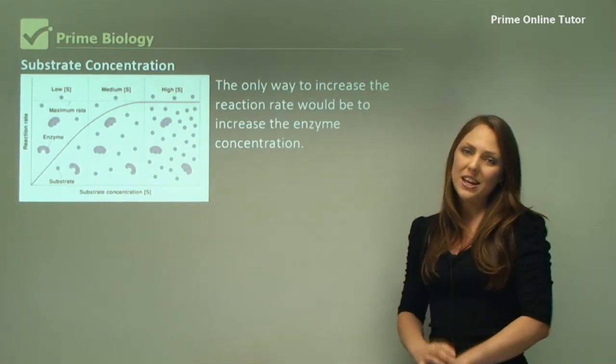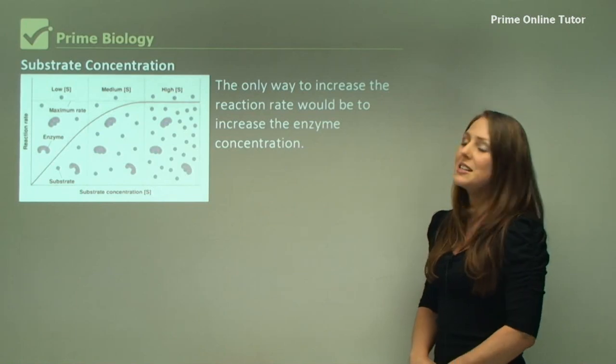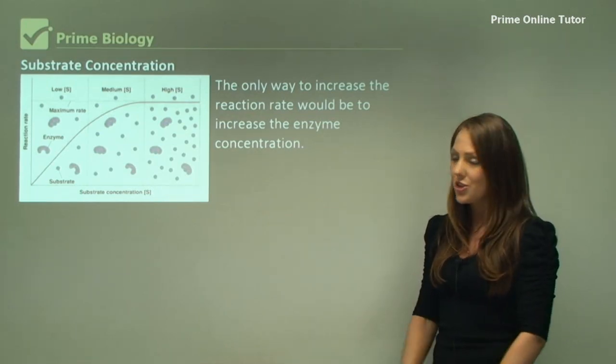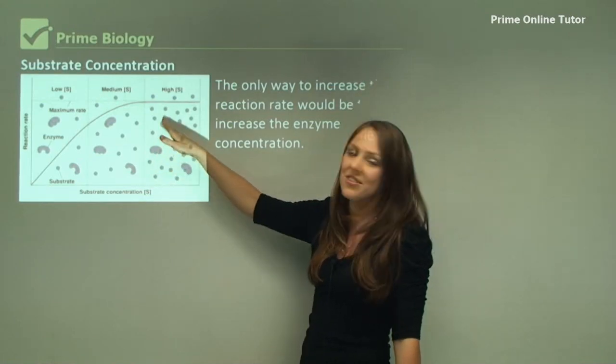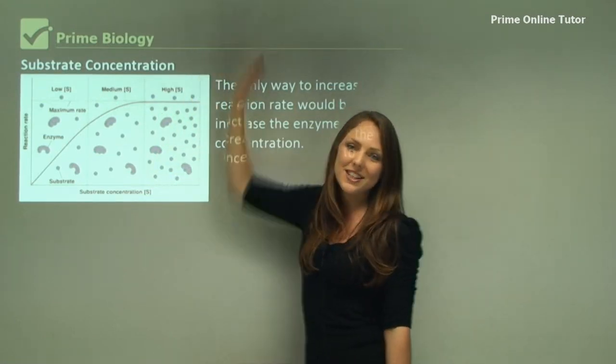The only way to increase the rate of reaction is by increasing the enzyme concentration, not the substrate concentration. So if we added more enzymes at this point, then the graph would start to increase again.